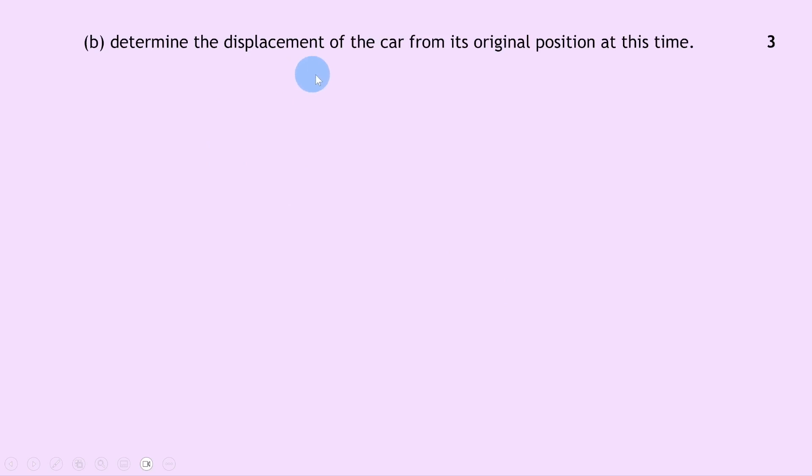Part b says to determine the displacement of the car from its original position at this time. Again there's three marks available for this.